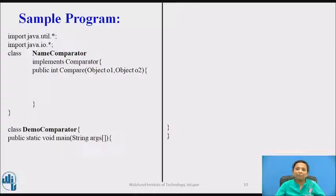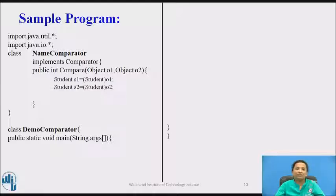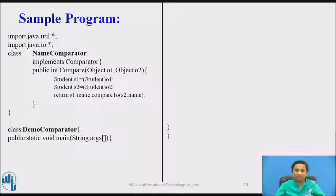The NameComparator class is defined which also implements Comparator interface. The compare method is overridden by the NameComparator class. In the compare method, the logic of name field comparison is written. Two objects are type-cast into Student type and assigned to local references s1 and s2. Then s1's name field is compared with s2's name field using the compareTo method of the String class, and the value returned by String's compareTo method is the same value returned by the compare method of NameComparator.